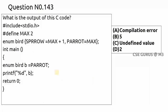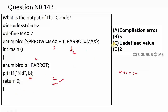Coming to question number 143: #define MAX has value 2. In the enum 'bird', sparrow equals MAX + 1, which is 3. Parrot is assigned MAX, which replaces the default next value (4) with 2. An enum object 'b' is created equal to parrot, so b = 2. Printing b gives output 2 with no error — option D is correct.